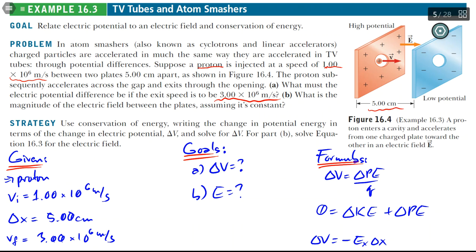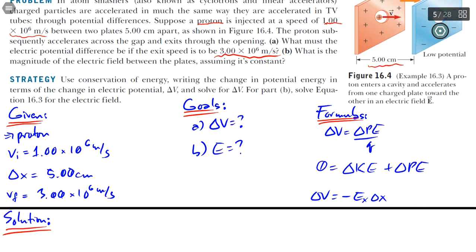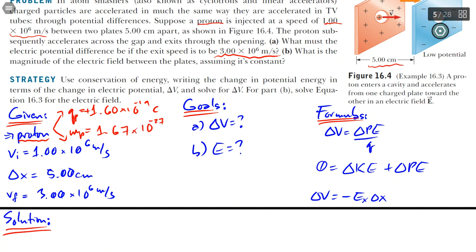All that I highlighted are given, but I'm going to outline something. If you know that the charge particle is a proton, immediately that should mean two things: that the charge on the proton is 1.6 times 10 to the negative 19 coulombs, and the mass of the proton is 1.67 times 10 to the negative 27 kilograms.